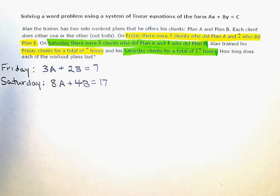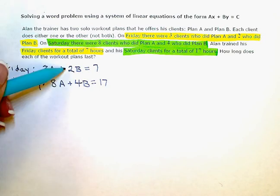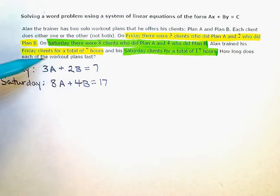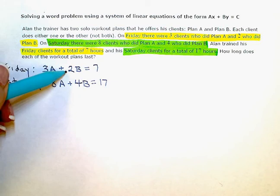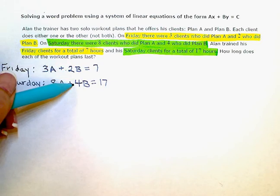Now I'm just going to solve this system using the elimination method. When I use the elimination method, I need two equations in standard form, which these are. And then I'm looking for one pair of exact opposite terms. So either the A's or the B's, but I need them exact opposites.